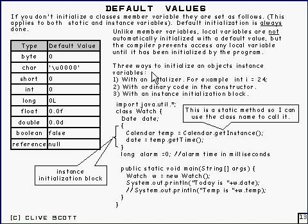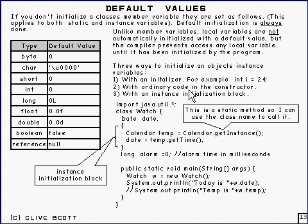Now, for instance variables, there are three different ways to initialize them. You can leave them uninitialized, in which case they get the default value. You can initialize them with an initializer — for example, simply saying 'int i = 24' — that's an initializer, constructed and initialized right there. You can also do it in the constructor itself, so when you create the object you then set values into it. And there's a third method which people don't use all that much, but it's perfectly possible: you use something called an instance initialization block — just a block between left and right curly brackets which sets the variable.